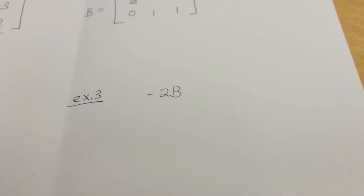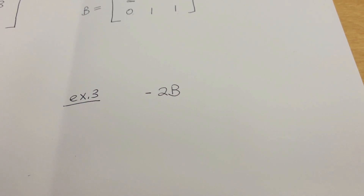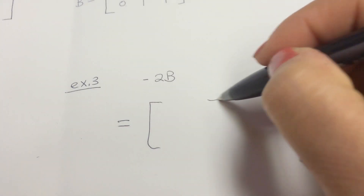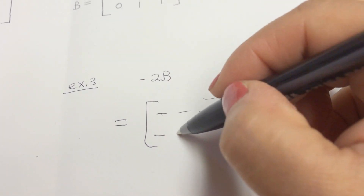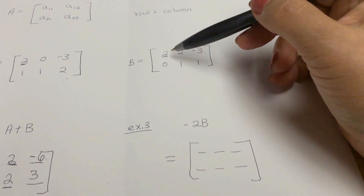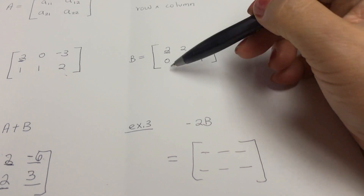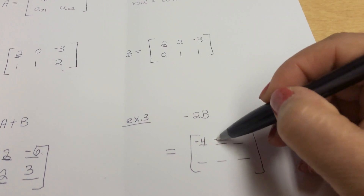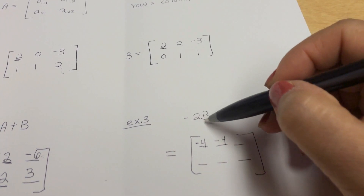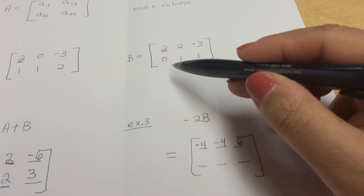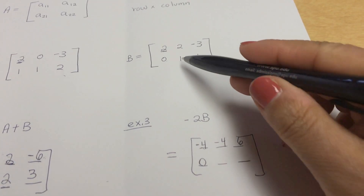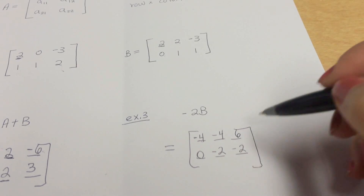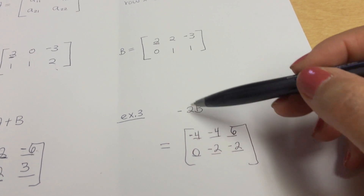Example three: negative two times matrix B. We multiply every element of B by negative two. Two times negative two is negative four; two times negative two is negative four; negative three times negative two is positive six; zero times negative two is zero; one times negative two is negative two; and one times negative two is negative two. We've essentially negative-doubled matrix B.